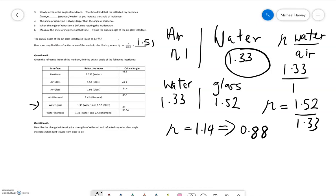Which means that the critical angle is going to be the sine inverse of 0.88, which will equal 61 degrees.